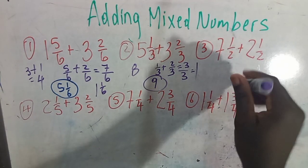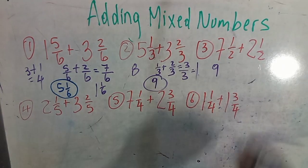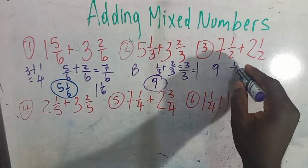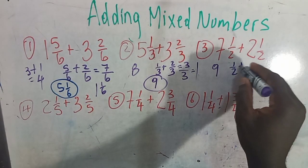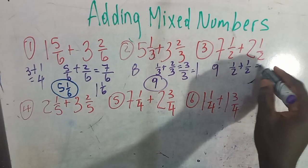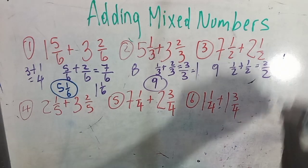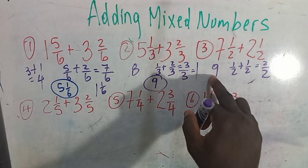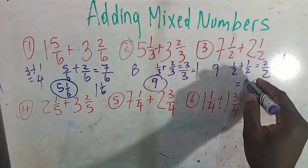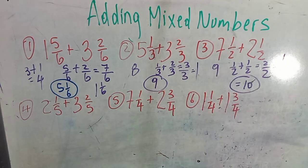7 plus 2 will give you 9. Deal with the fractions: 1 half plus 1 half equals 2 over 2, which is the same as 1. 9 plus 1 equals 10. And that is your answer.